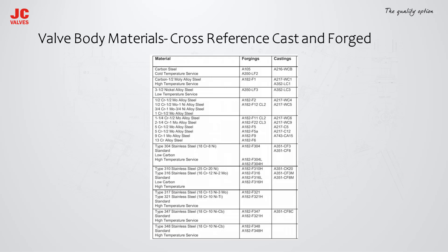The valve can be forged or cast. For smaller size valves it can also be produced from bar stock. The table shows the cross-reference between cast and forged materials per ASTM. For example, carbon steel: forged A105, cast A216 WCB. Stainless steel 316L: forged A182 F316L, cast A351 CF3M.